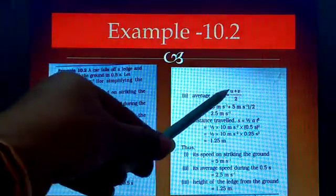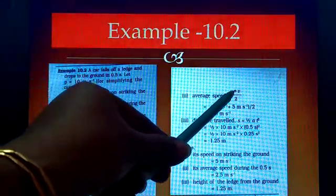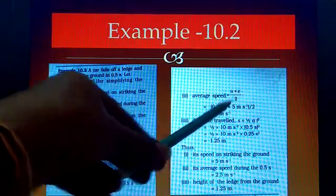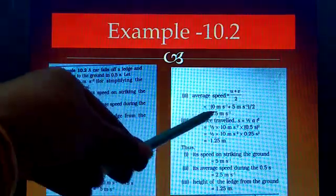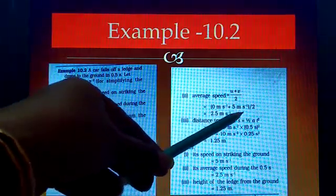Then average speed we can calculate: initial velocity plus final velocity divided by 2. Substitute all the values, we get 2.5 m/s.